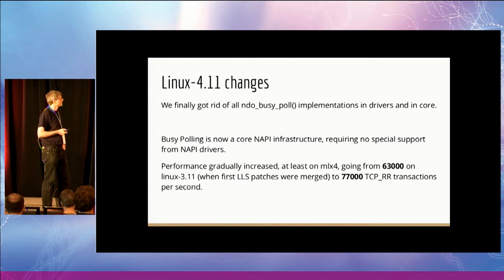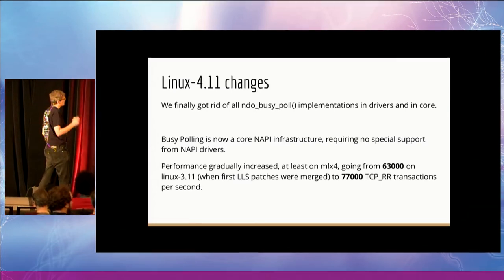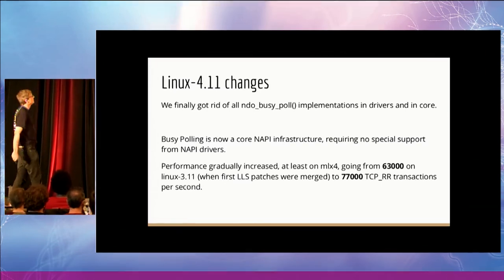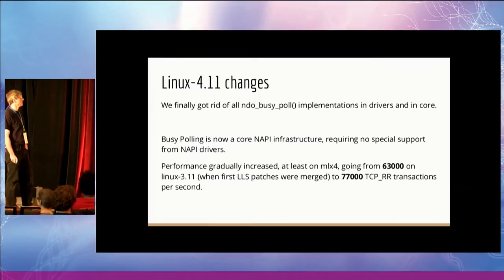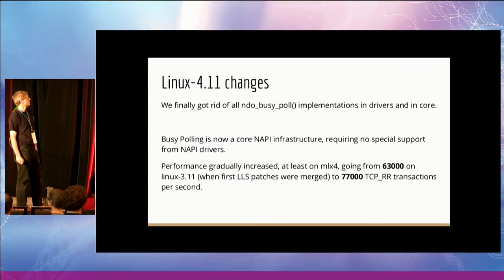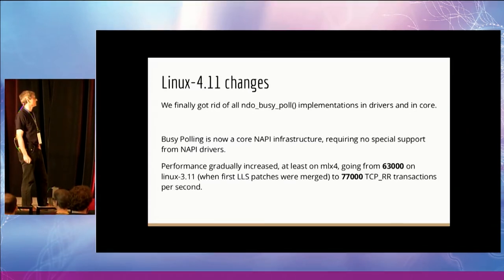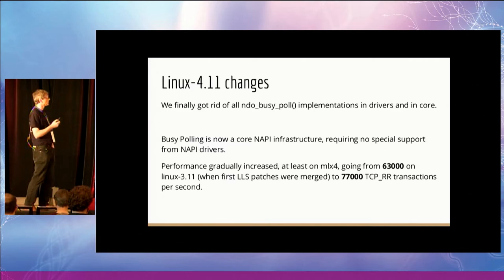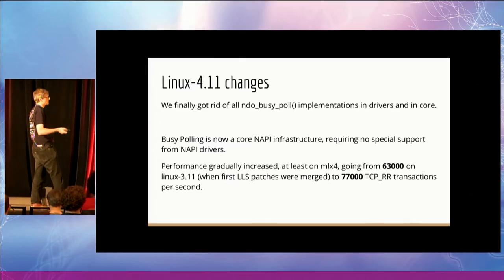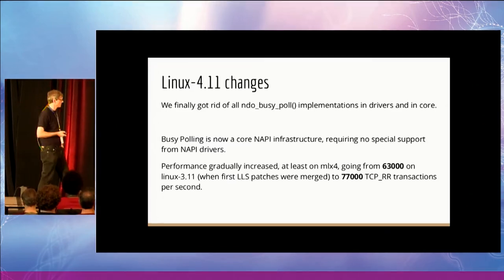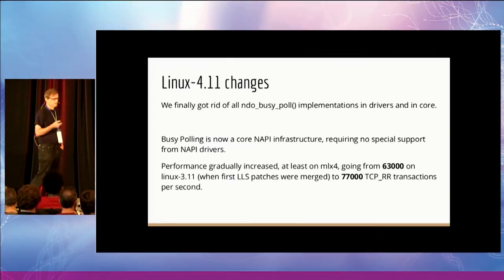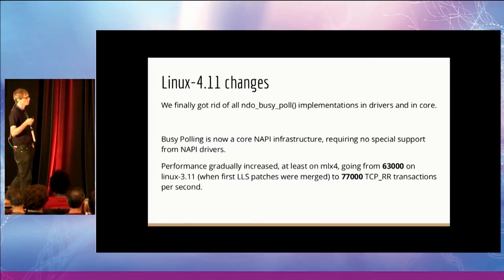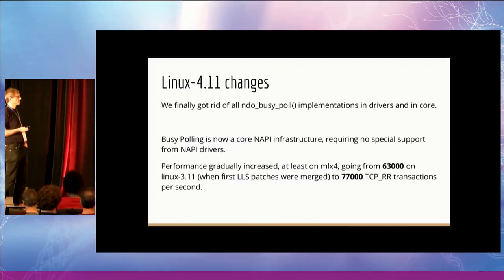More recently in 4.10, we did a small change allowing UDP for unconnected UDP sockets. That's nice for a small system with a single NIC with a single queue — all UDP messages will eventually come through a single NAPI poll even if the socket is not connected. We also did a small change in the napi_complete_done API to allow a driver to not rearm the interrupt in the busy polling loop, reducing the traffic between the host and the NIC — no more enabling, disabling, enabling, disabling interrupts repeatedly. Then in 4.11, we finally got rid of all the NDO busy polling implementation in drivers. Performance slightly increased from the early days: on Mellanox 4 we get 77,000 TCP RPC transactions, and on Mellanox 5 we're above 100,000 now.